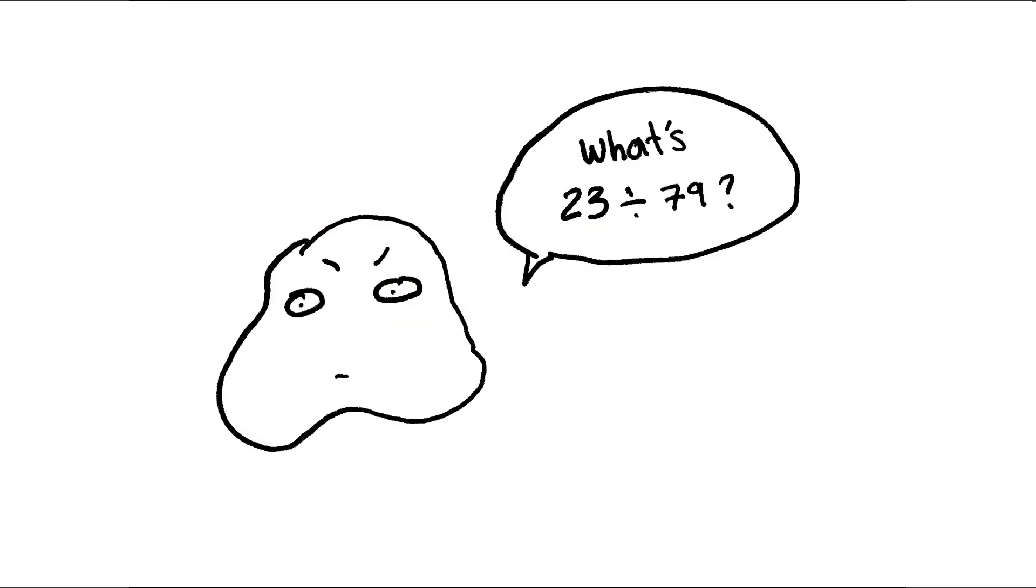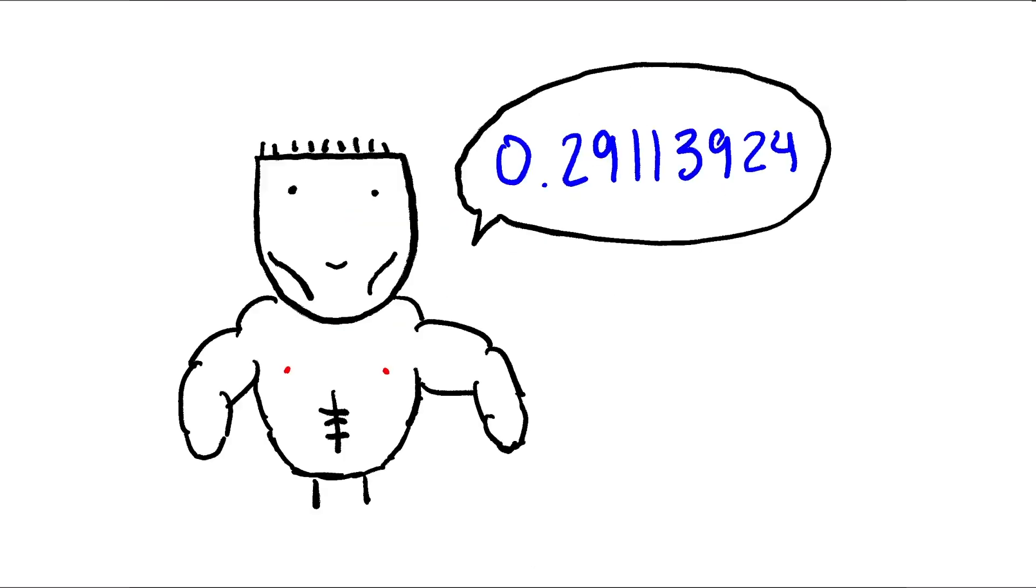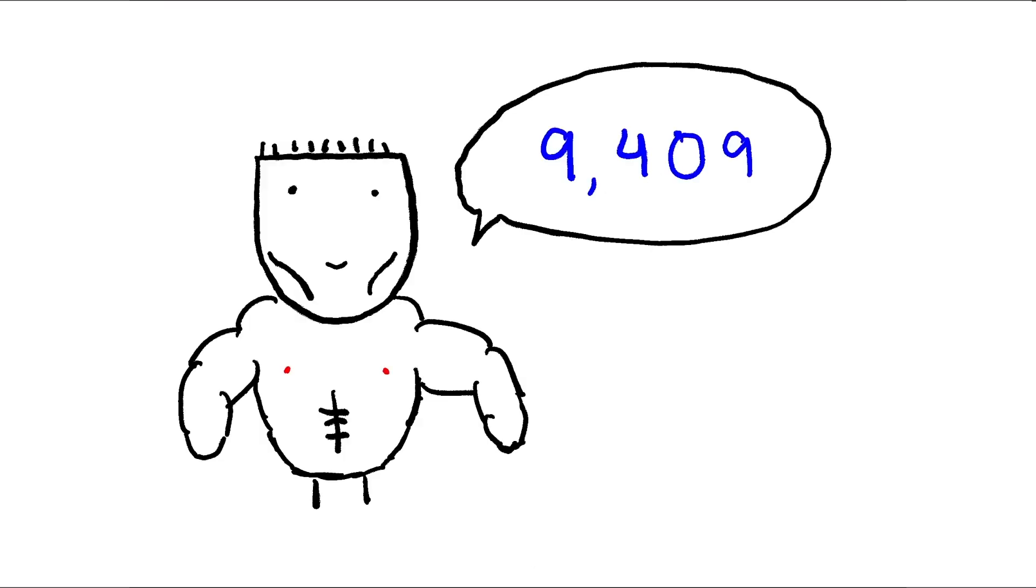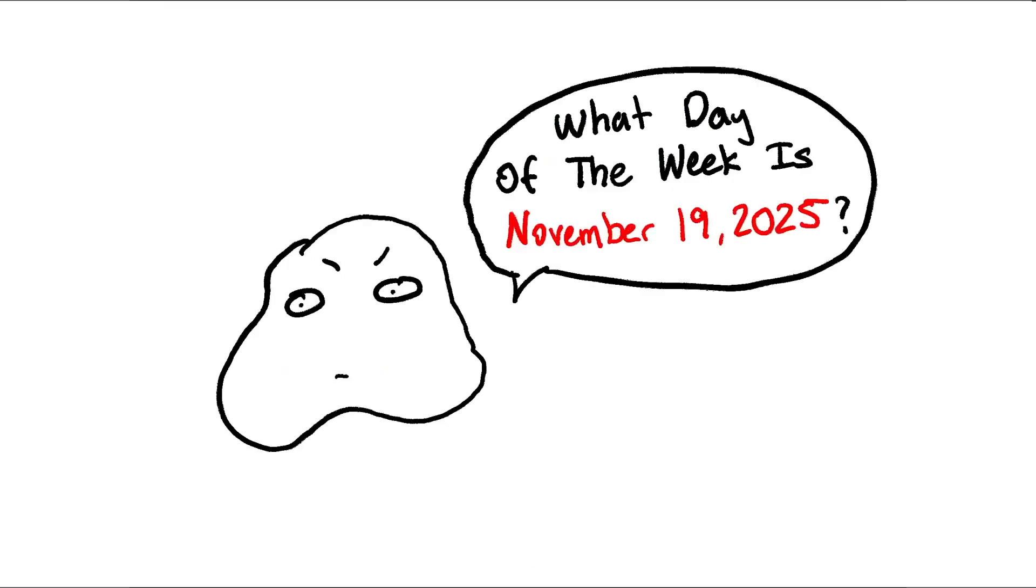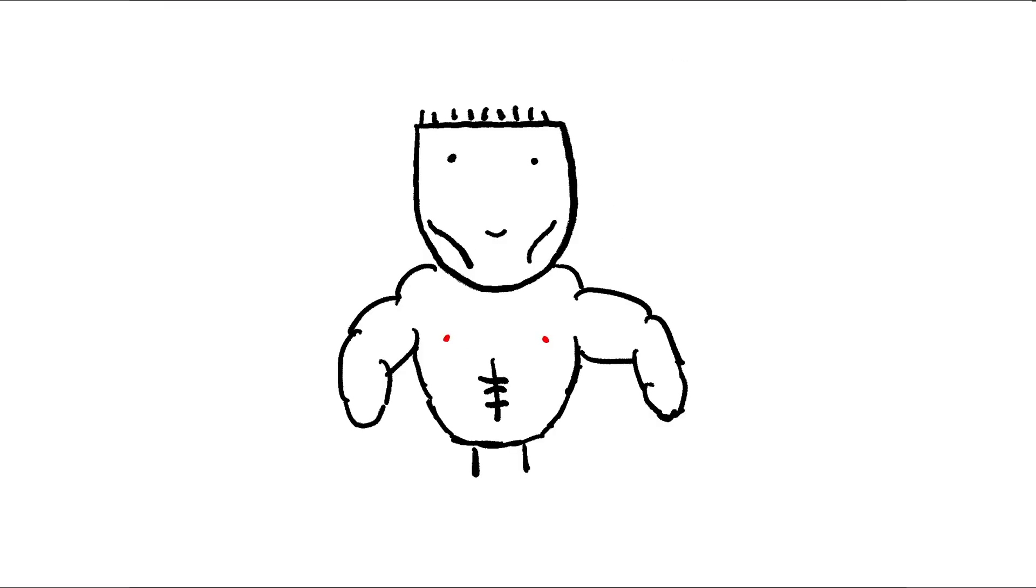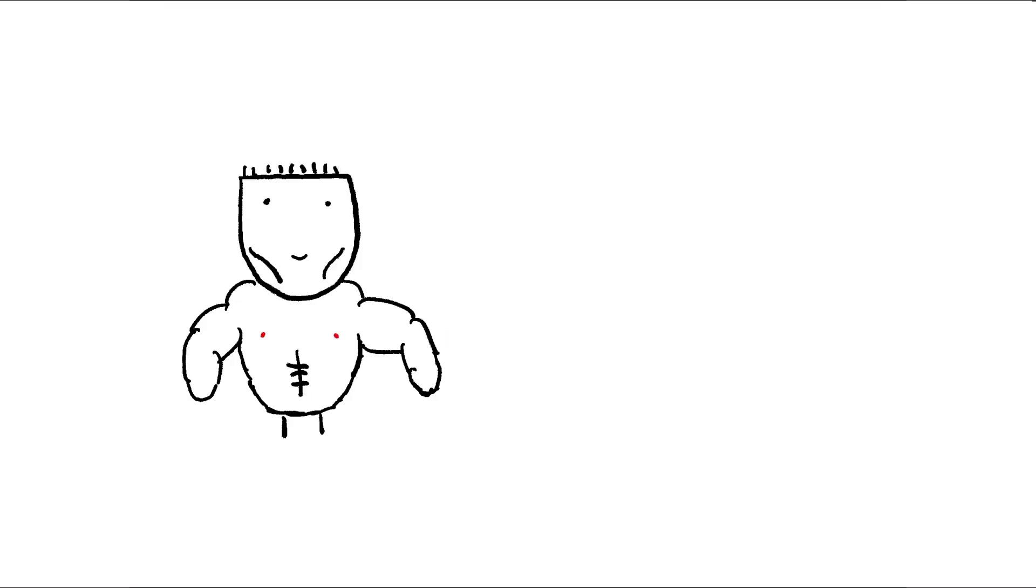Yo Chad, what's 23 divided by 79? 0.29113924. Yo, what's 97 squared? 9409. What day of the week is November 19th, 2025? Wednesday. 7409. Well, shit.